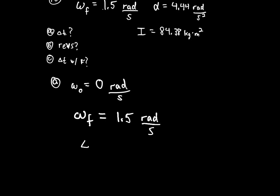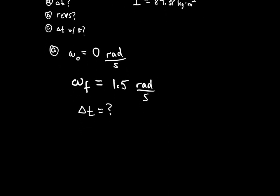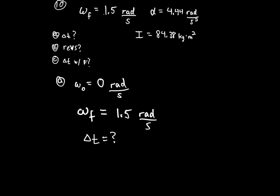This goes back to Chapters 2 and 3. We can use a chart with change in position, initial velocity, final velocity, acceleration, and change in time. The angular equivalents are: change in theta, omega-initial, omega-final, alpha, and delta-t.